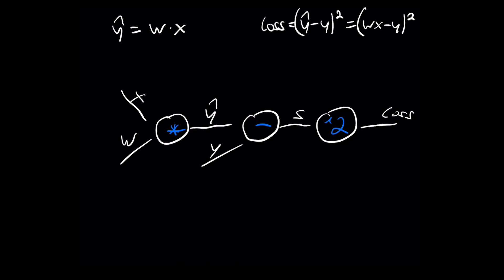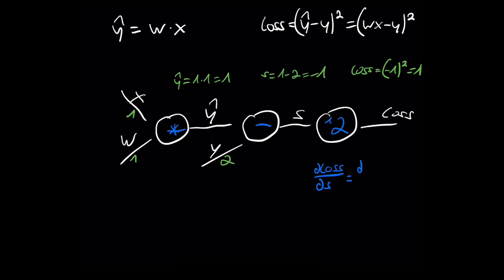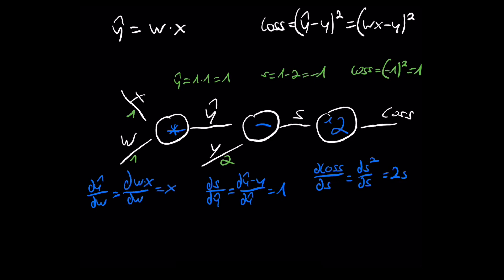Let's use some actual numbers. We know the input x and the corresponding y from the training data, and we initialize the first weight with one. So y-hat is 1 times 1, which is 1. Then we do the subtraction 1 minus 2, which is minus 1, and then the square operation — so the loss is minus 1 squared, which is 1. Now let's calculate the local gradients. d_loss/d_s: the function is s squared, and the gradient of s squared with respect to s is 2s. Next, d_s/d_y_hat: this is the gradient of y_hat minus y with respect to y_hat, which is simply 1. And d_y_hat/d_w: y-hat is w times x, and the gradient of this is x.